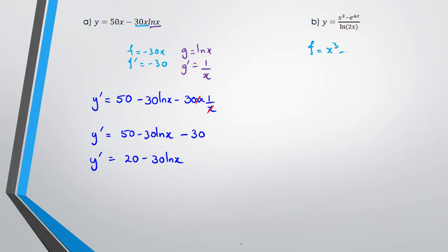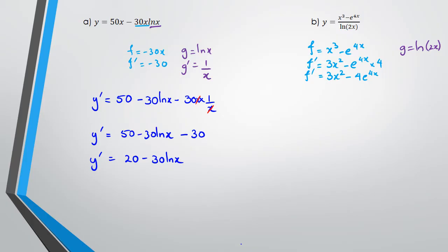Question B — I'm using the quotient rule. F is equal to x cubed minus e to the power of 4x, which means F dash is equal to 3x squared minus 4e^(4x). As for G, G is equal to ln(2x), and G dash is equal to 1 over 2x multiplied by 2, which simplifies to 1 over x.